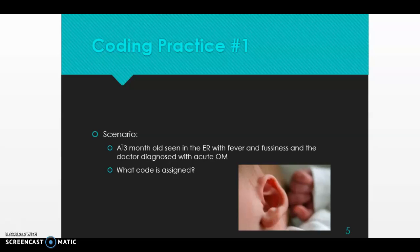To find the code, identify your main term — the noun, not an anatomical site. The main term here is 'otitis.' Open your ICD-10-CM index to O, go to 'otitis,' then to 'media' as a subterm, and then to 'acute.' You should see H66.90.